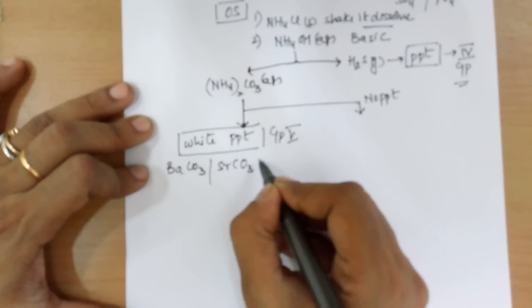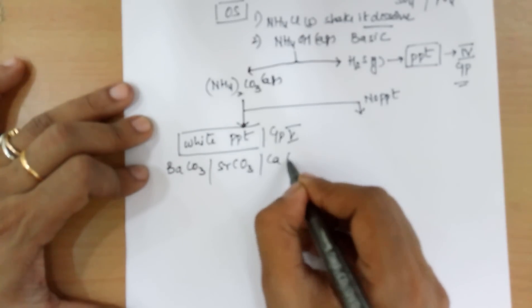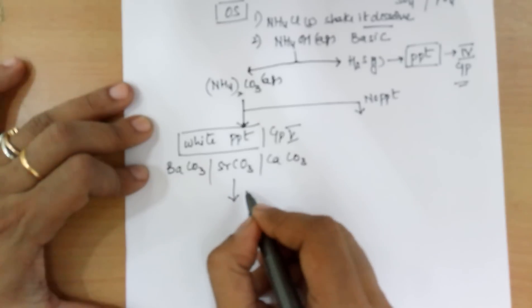The PPTs are of barium carbonate, or strontium carbonate, or calcium carbonate, whatever it is, add acetic acid to it.